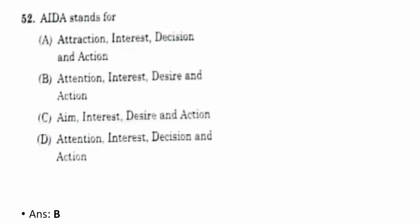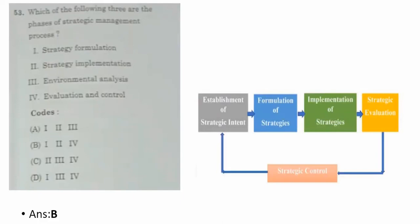Fifty-second question: what does AIDA stand for? It stands for B — attention, interest, desire, and action. Fifty-third question: which are the three phases of strategic management? The correct option is B — one, two, and four: strategic formulation, strategic implementation, and strategic evaluation and control.